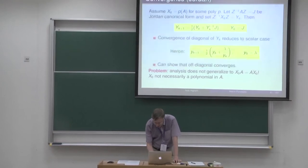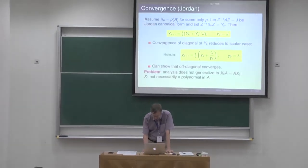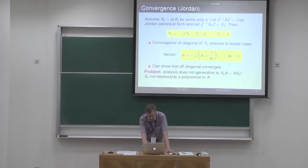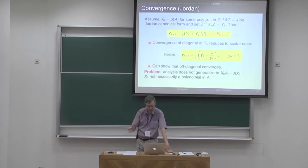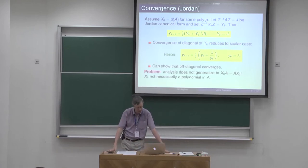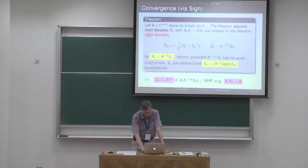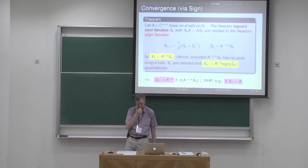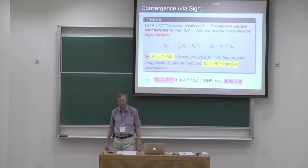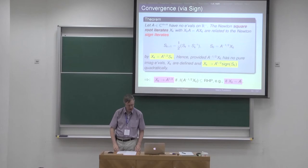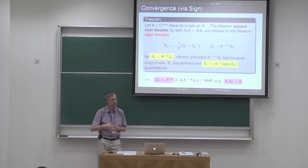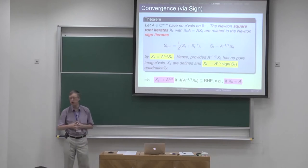That's not my favourite way of proceeding, so I'm going to abandon that. When I was writing my book on matrix functions, I wanted to give a proof of the convergence of this iteration, and I didn't really want to do it this way. I eventually realised there's a much nicer way — much more elementary — that uses something we know already. This theorem connects the Newton iteration to the sign iteration.